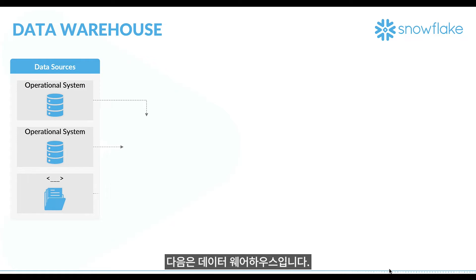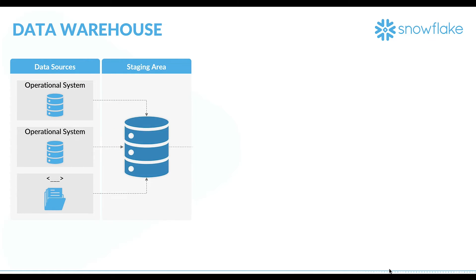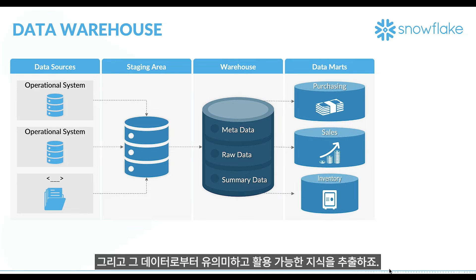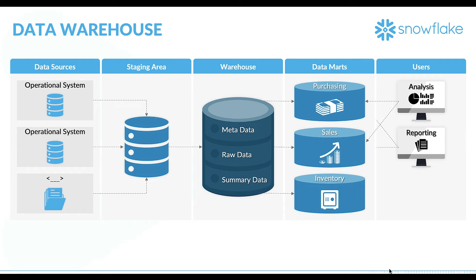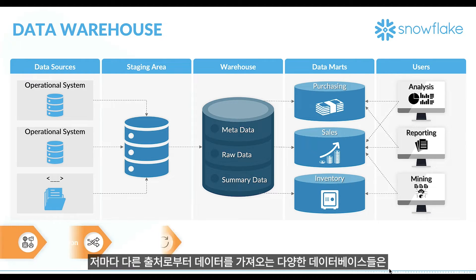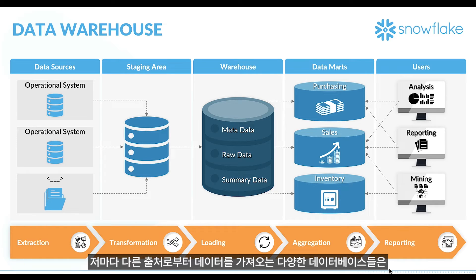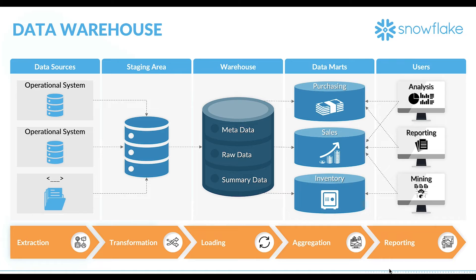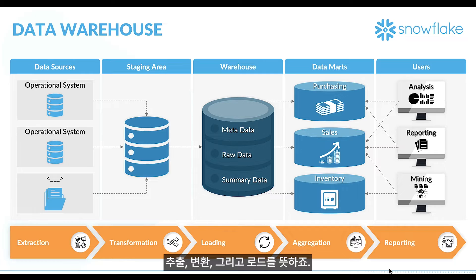A data warehouse is a technology where you store historical data for processing and extracting meaningful and actionable insights. Data from all different databases and sources are loaded and processed into a data warehouse with the help of scheduled batch jobs. This loading process is called ETL — Extraction, Transformation, and Loading.